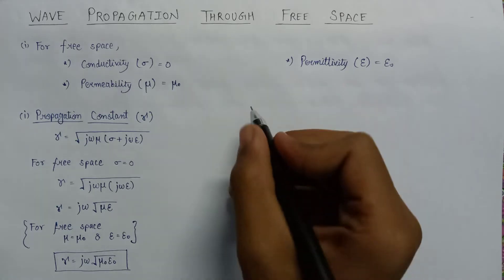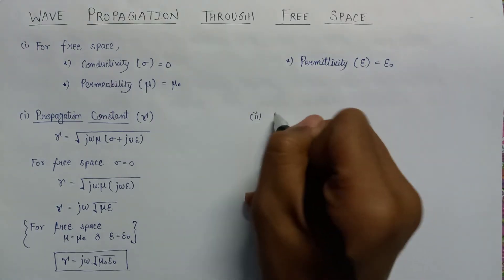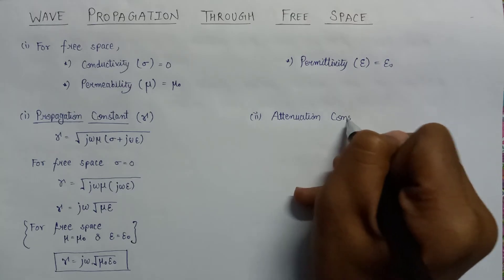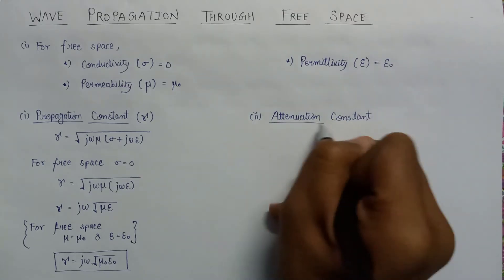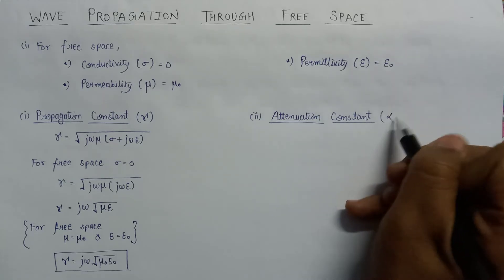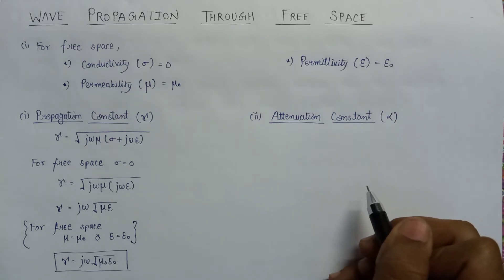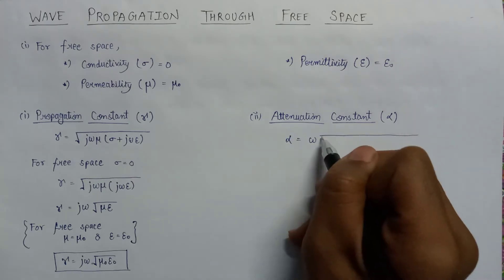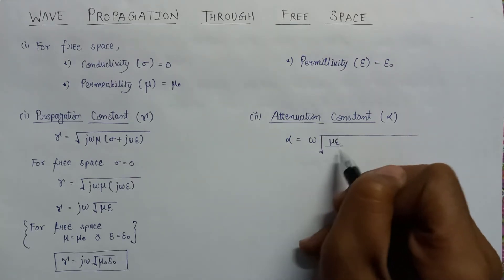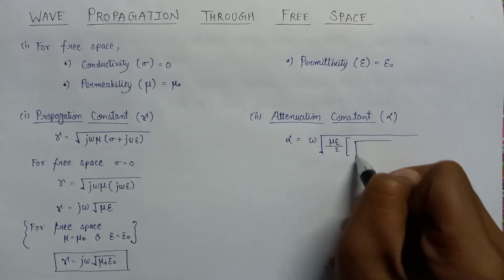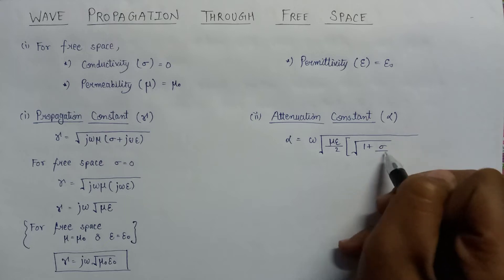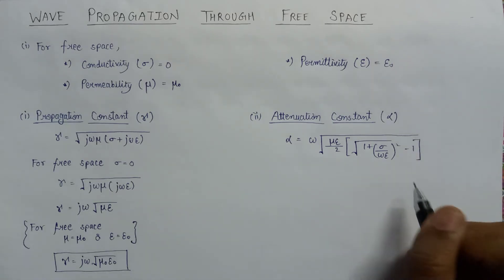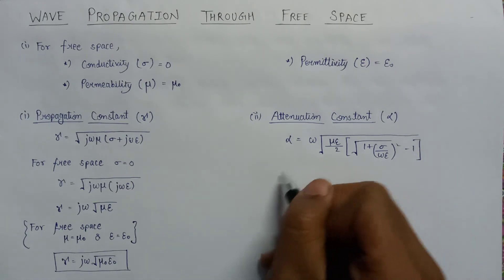Now let us have a look at the second factor, which is the attenuation constant, represented by alpha. From the derivation of the equation of a plane wave, alpha equals omega times the square root of (mu·epsilon)/2 times the square root of (1 + (sigma/omega·epsilon)²) minus 1.